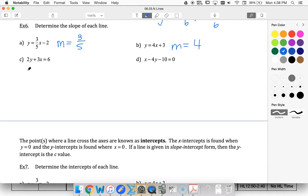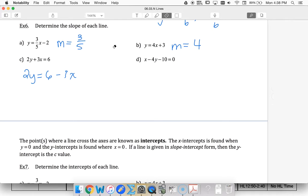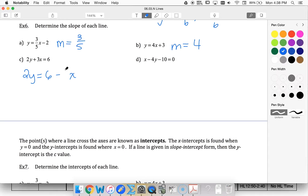This one requires some rearranging. So I'm going to subtract 3x first. And next, I'm going to divide everything by 2. So 6 divided by 2 minus 3 over 2x. That simplifies to 3 minus 3 over 2x.